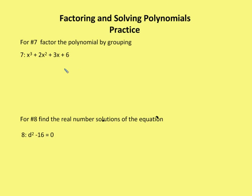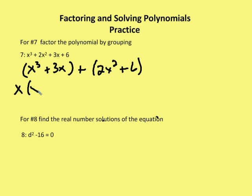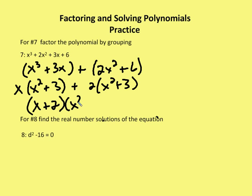I have another grouping problem: x cubed plus 2x squared plus 3x plus 6. I look for common factors, I don't see any. I try the first and third terms grouping those: x to the third plus 3x plus 2x squared plus 6. I factor out x times x squared plus 3, plus 2 times x squared plus 3. And I'm left with x plus 2 times x squared plus 3.